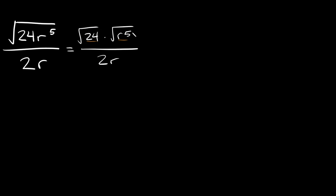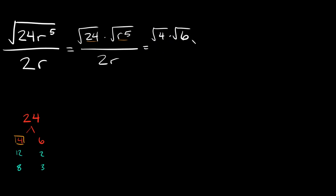We need to simplify these two radicals. The square root of 24 — that's not a perfect square, but we can break it down into its factors. I can break 24 into 4 times 6. The reason I want to use 4 times 6 is because 4 is a perfect square, and whenever we can include a perfect square as one of our factors we want to do that because it simplifies our math. So the square root of 24 becomes the square root of 4 times the square root of 6, multiplied by the square root of r to the fifth.